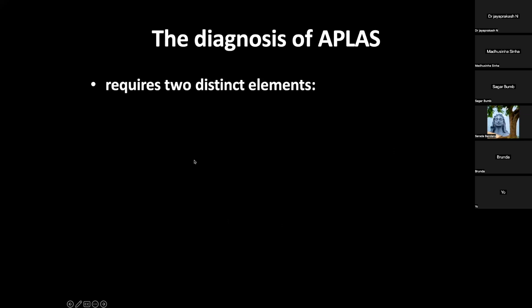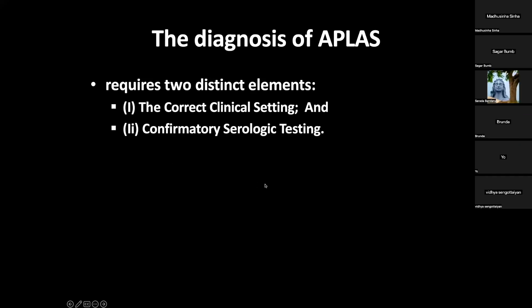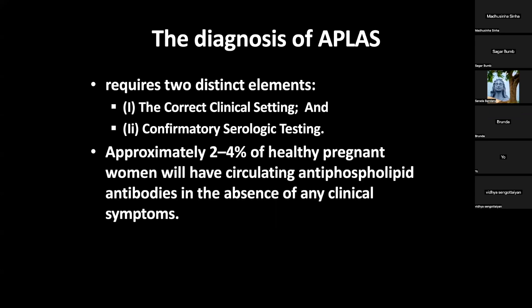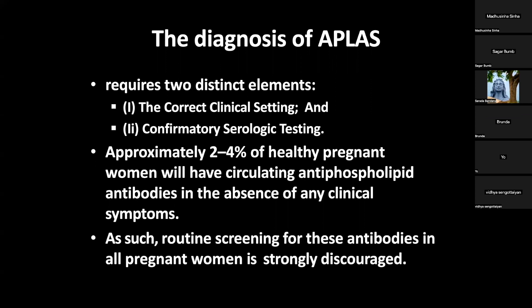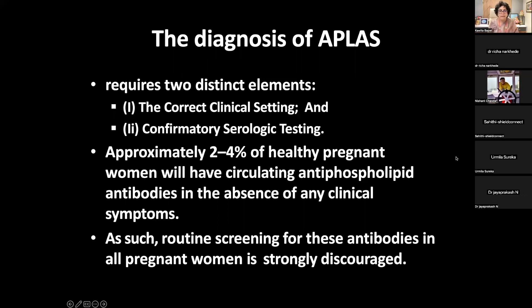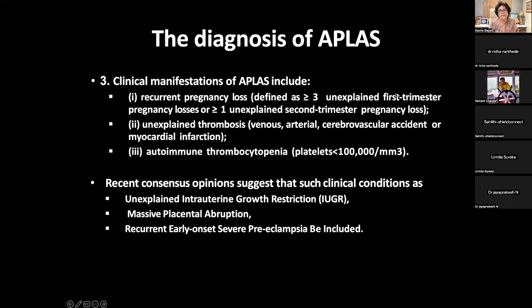Diagnosis requires two distinct elements: the correct clinical setting and confirmatory serological testing. Approximately two to four percent of healthy women will have circulating antiphospholipid antibodies in the absence of any clinical symptoms. Routine screening for these antibodies in all pregnant women is strongly discouraged — we should not test normal pregnant females.